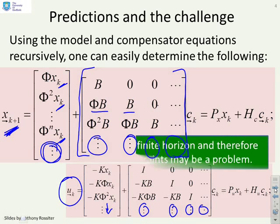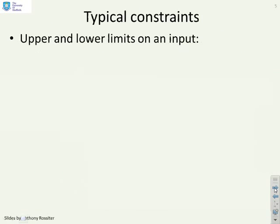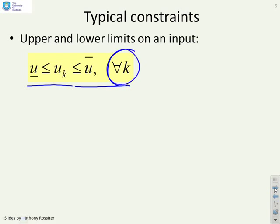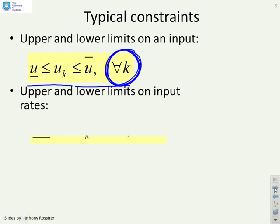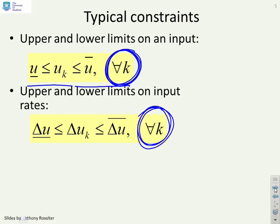Now, why is that a problem? I need to compare them against constraints. So I may have simple constraints on the input, upper and lower limits. But critically, you see here, they have to be satisfied for all samples. I could have upper or lower limits on the rate constraints. And again, they have to be satisfied at every sample.